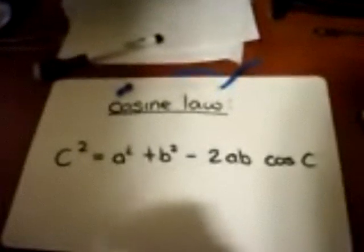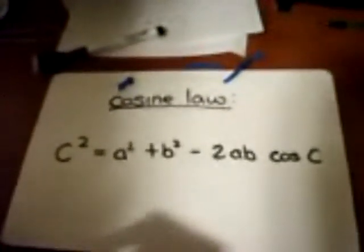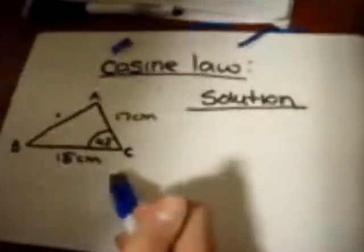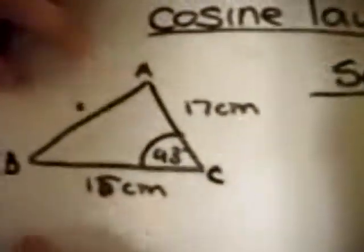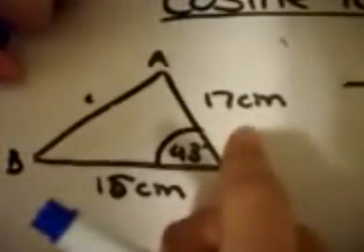The cosine law is used when an angle and its opposite side isn't given. So we have a triangle here. Angle A's opposite is 15 centimeters. Angle B's opposite is 17 centimeters.